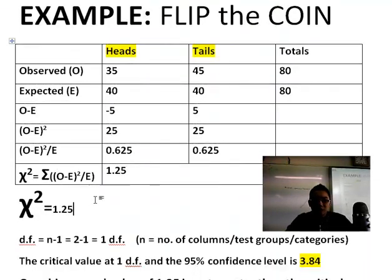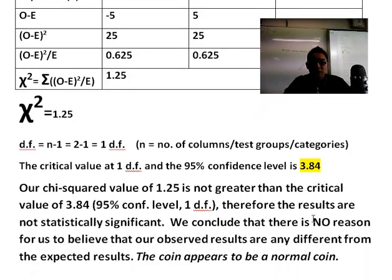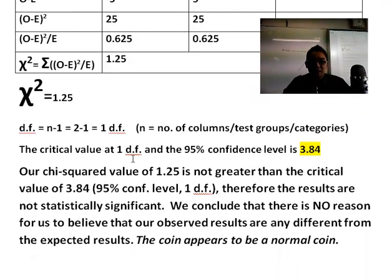Does our chi-squared value beat 3.84? In this case, take a look at this sentence, maybe pause the video and read this slowly. Our chi-squared value 1.25 is not greater than the critical value. Therefore, the results are not statistically significant. We conclude that there's no reason for us to believe that our observed values are any different from the expected results.